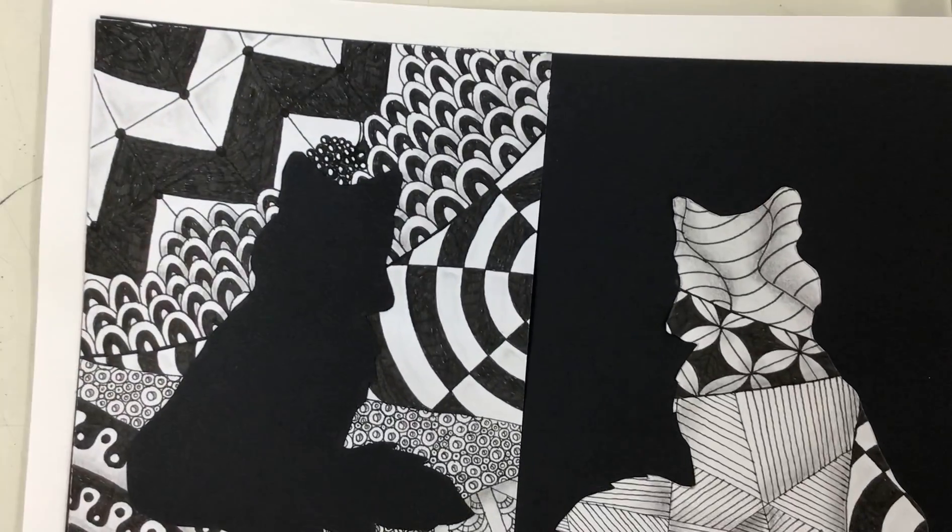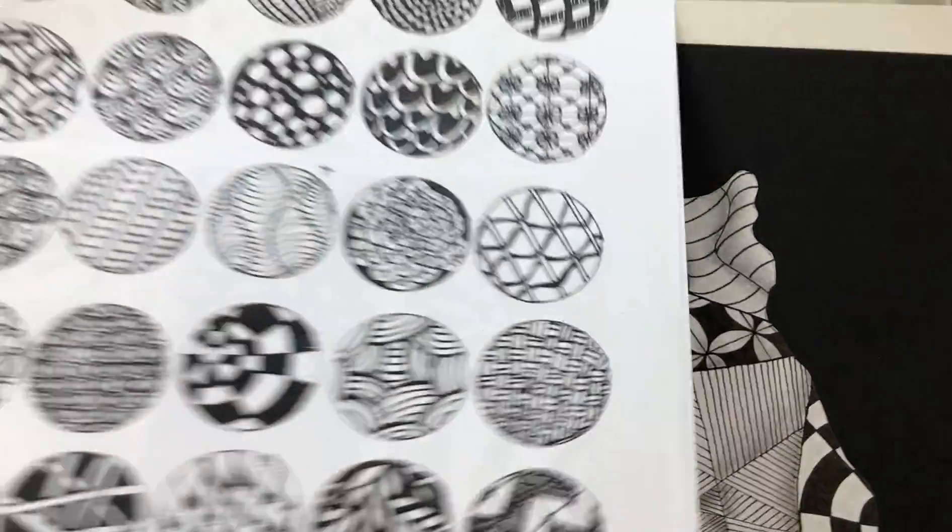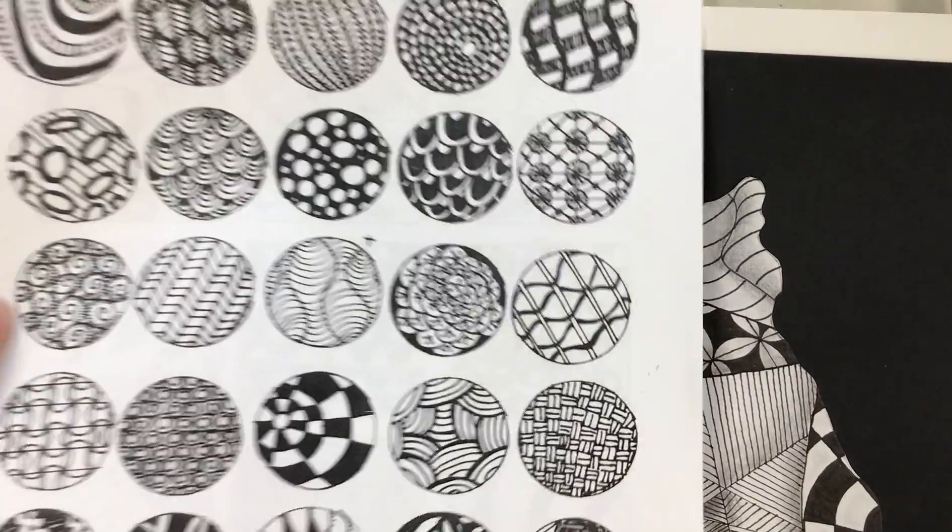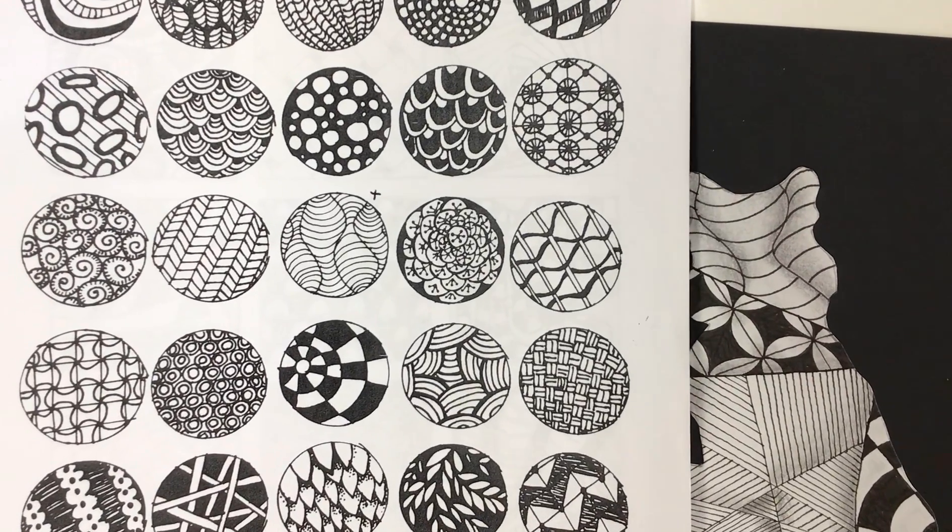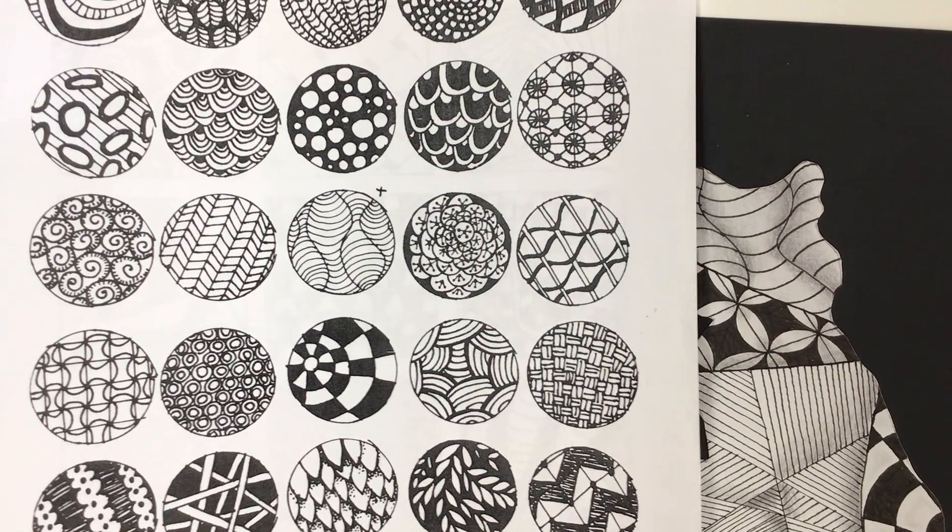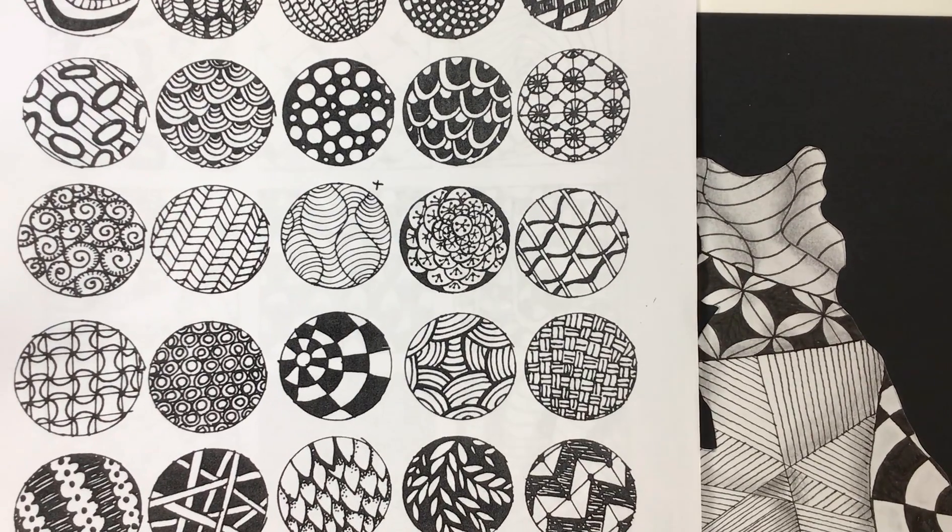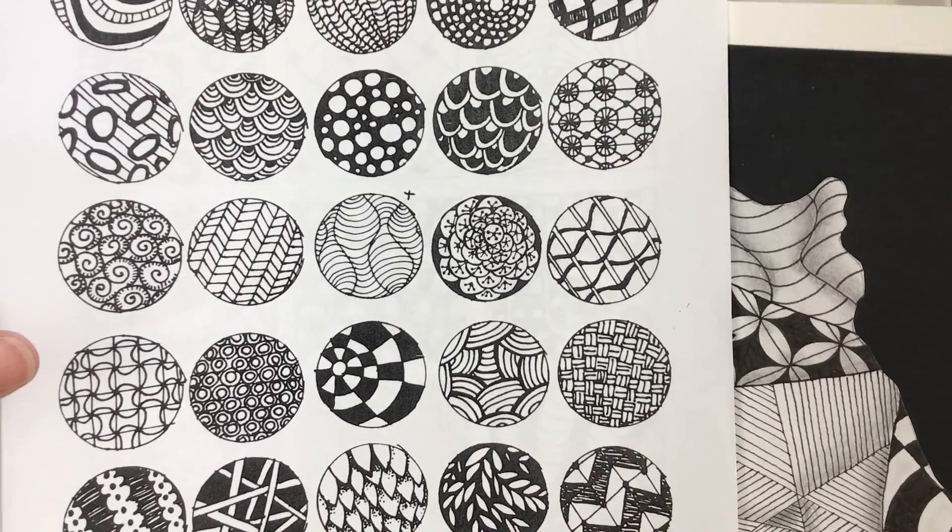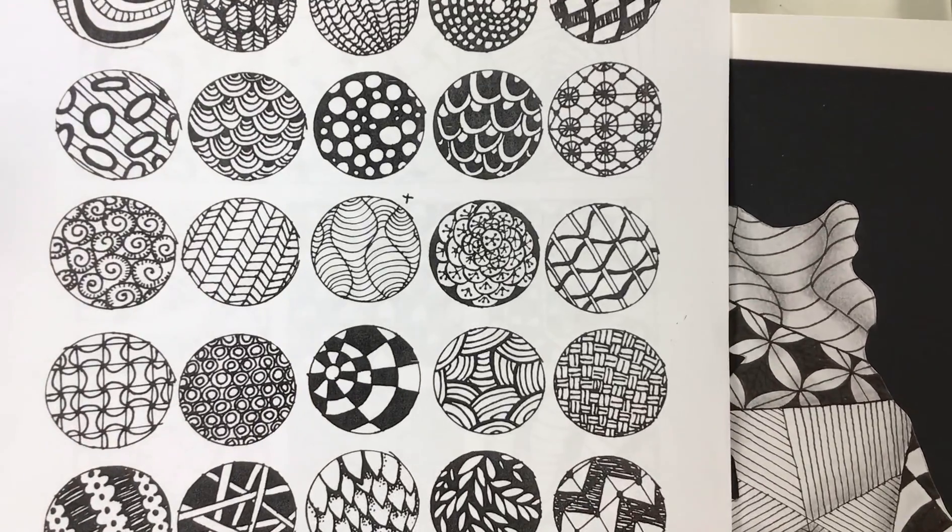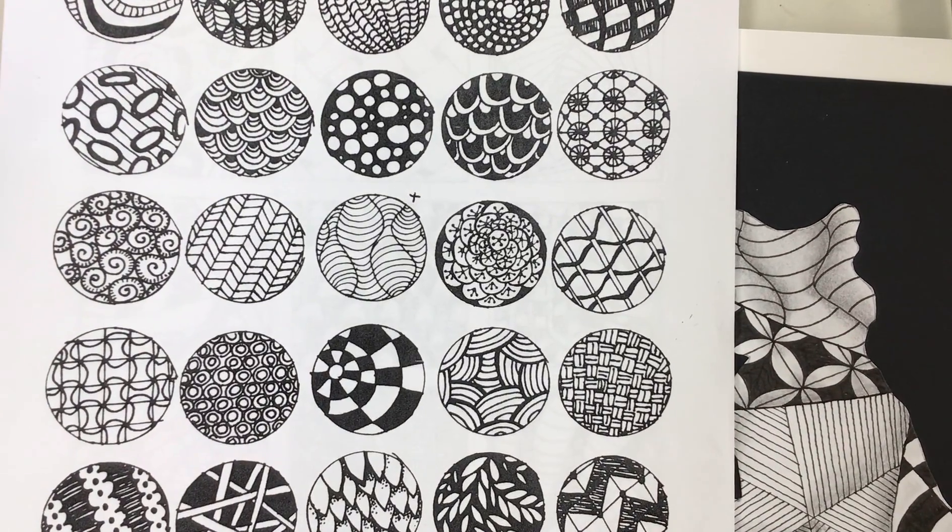So the materials that you're going to need, you can use this packet that I gave you if you'd like to use that as a visual reference, or you could go to Google and do a search on Zentangle patterns, and there's going to be tons of patterns that come up that show you step-by-step how you can do some more complex ones if you'd like to try those.